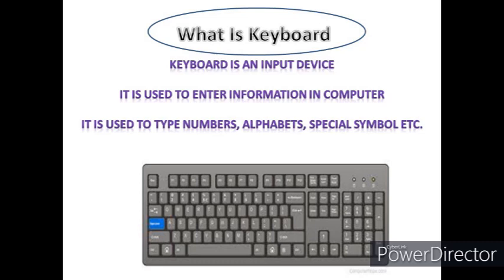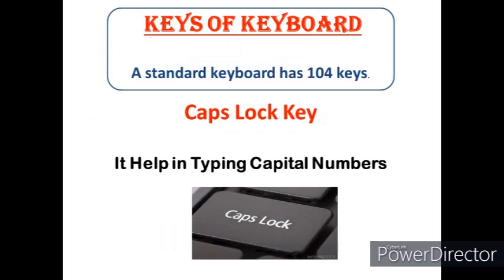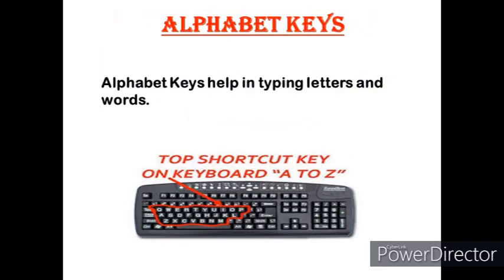Look at the picture — this is a keyboard. A standard keyboard has 104 keys. The first is the Caps Lock key. This key helps in typing capital letters. Once you press the Caps Lock key, whatever alphabet you type will be in capital letters. Next is the Alphabet key, which helps in typing letters and words in your document.